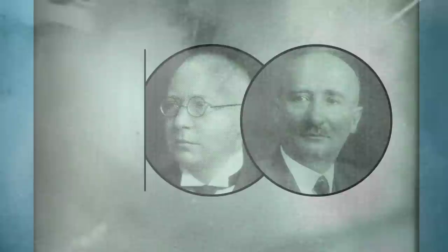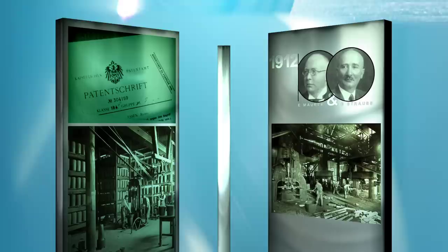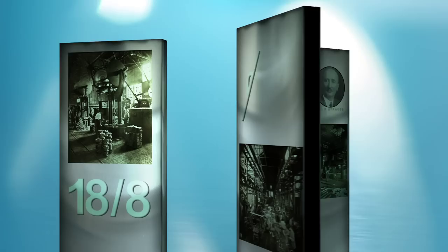In 1912, in Germany, Edward Maurer and Benno Strauss are granted the first patent to produce chromium-nickel stainless steels. Nowadays, this family of austenitic grades, also called 18-8, accounts for 60% of the world's stainless steel production.